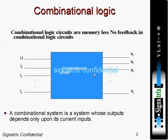You are seeing one block diagram of a combinational logic. Combinational logic circuits are memoryless and no feedback is required. There is no feedback from output to input — no feedback loop in the combination circuit. As soon as there is a change in input, you will find a change in the output. A combinational system is a system whose output depends only upon its current input.